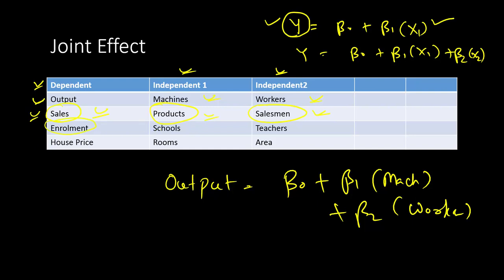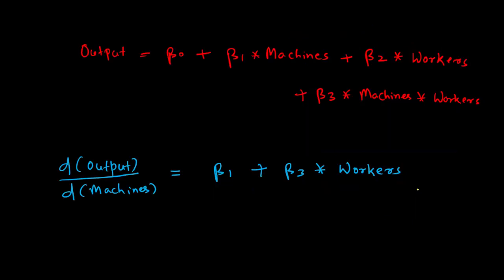Another example is enrollment in a school — trying to find out how increasing the number of schools increases enrollment. If you keep the number of teachers constant and just increase the number of schools, that is not going to increase enrollment. A further example is house prices: increasing the number of rooms is not going to increase the house price unless you also increase the area of the house.